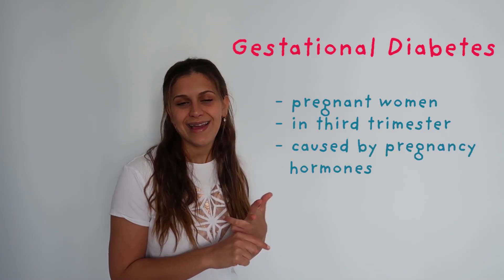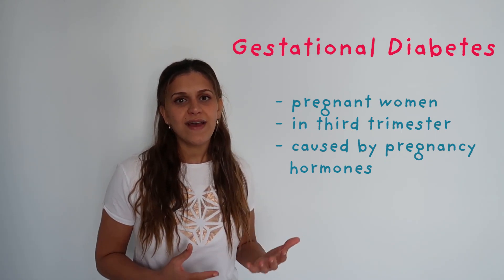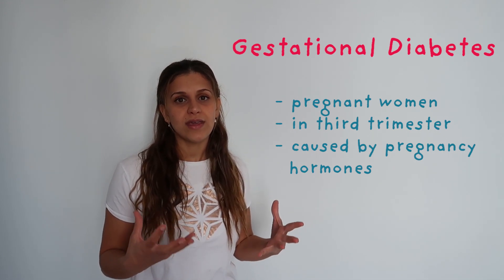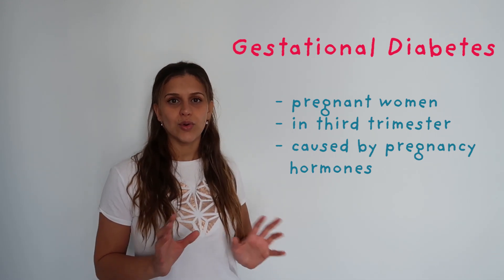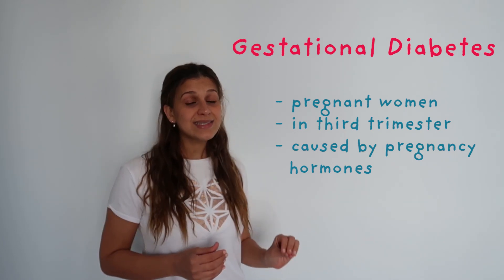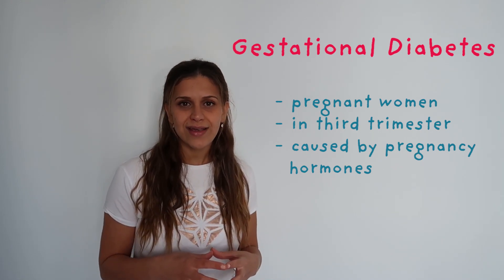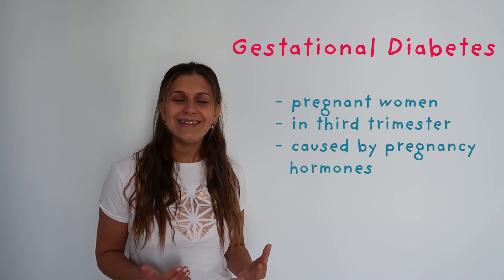Quick recap: type 1 — the body attacks the beta cells, so insulin is not produced. Type 2 — the body does produce insulin, but it's rejected: insulin resistance. Then we have gestational diabetes, which mostly happens in pregnant women in their third trimester. The hormones of the pregnancy affect the insulin or glucagon, and so the mother will get a high level of glucose in her blood. This works very similar to type 2 diabetes and is also a risk factor for developing type 2 diabetes later on in her life.